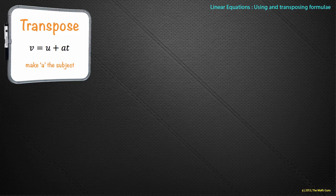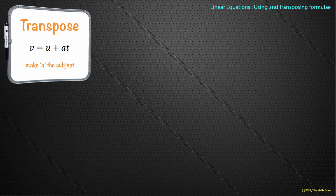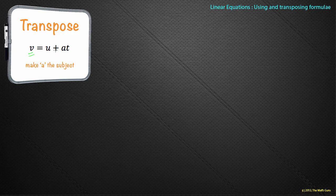Now here's some of that wording from the beginning. Transpose V = U + AT to make A the subject. The idea is that V is currently the subject - it just means that V is first, V is on its own. All it wants to do is effectively move things around so that A is on its own.